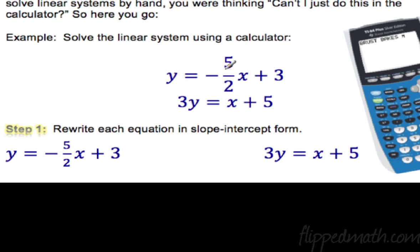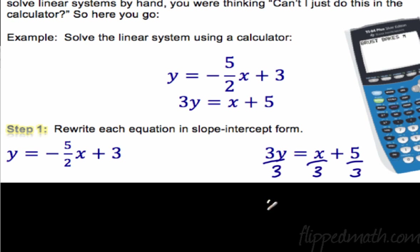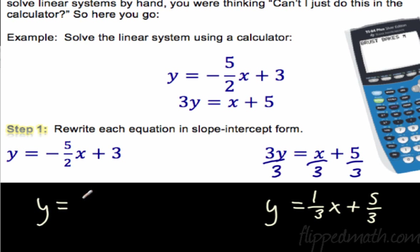Here's our example: y equals negative 5/2 x plus 3, and 3y equals x plus 5. The first step is we need to write each of these in slope-intercept form — y equals mx plus b. We're going to change the second equation: dividing through gives y equals 1/3 x plus 5/3. You wouldn't want to graph 5/3 by hand — that's a mess. The other line is already in y equals mx plus b form.